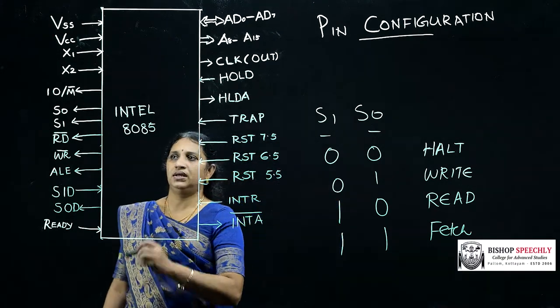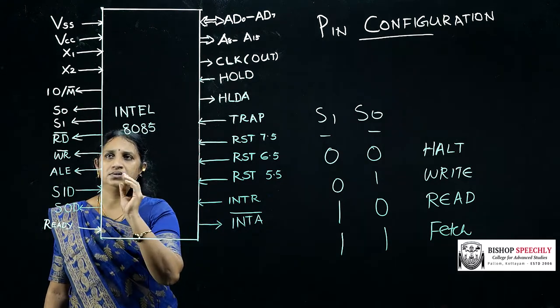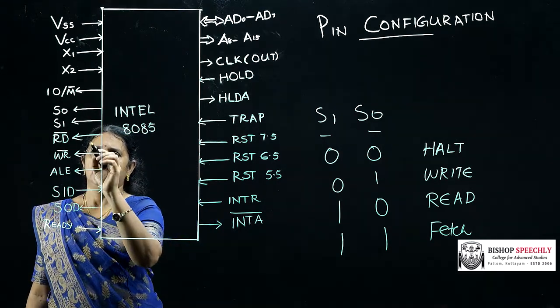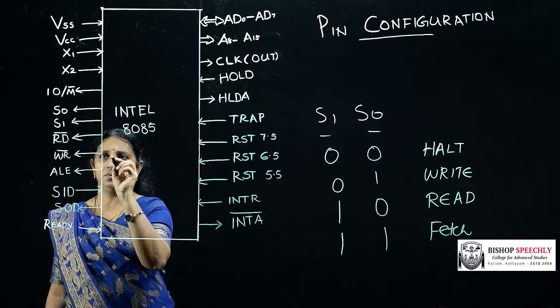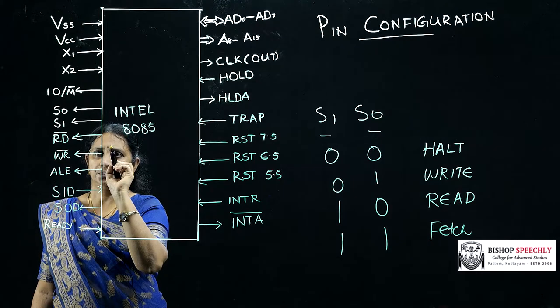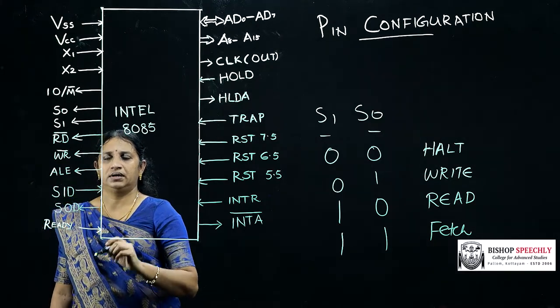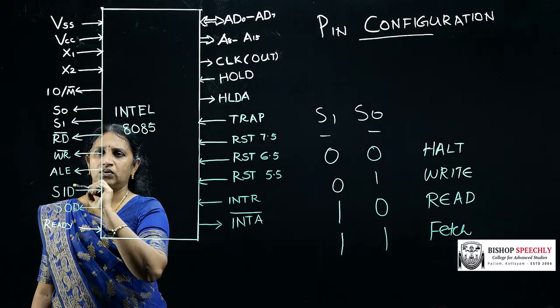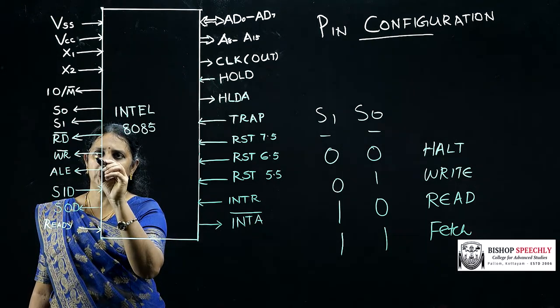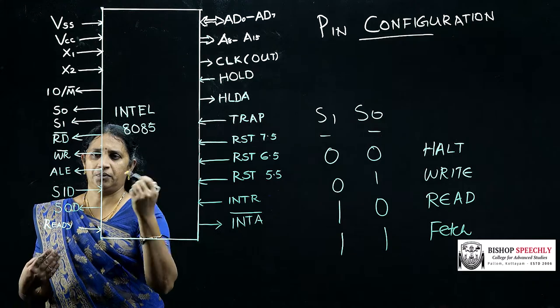The next signal is RD̄ for indicating the read operation. When the read operation is performed there will be a low value in the pin. The next pin is WR̄. The WR̄ means it is a low signal, that is if we issue a low signal the write operation will perform.